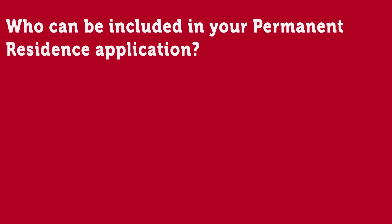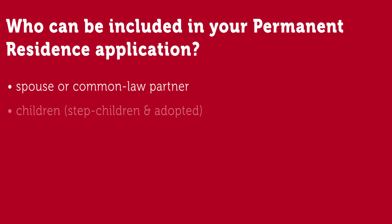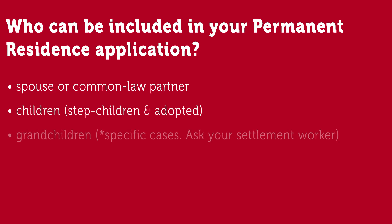Who can be included in your permanent residence application? Family members that can be covered in your PR application include spouses or common-law partners, dependent children, stepchildren, adopted children, and grandchildren. A dependent child must be under the age of 22 years at the time you applied for refugee status and be unmarried.